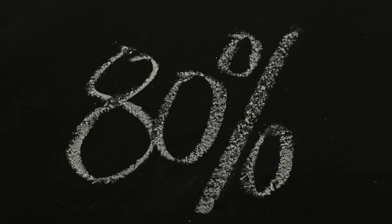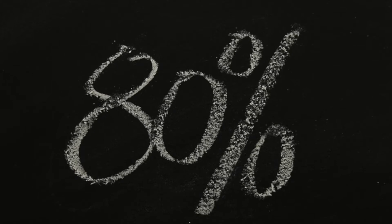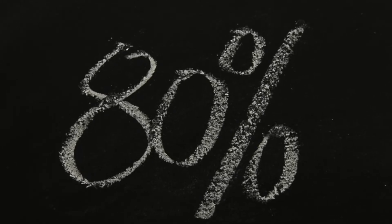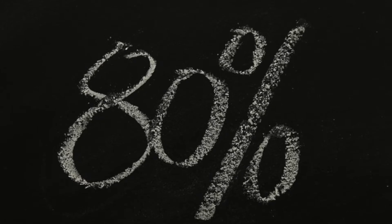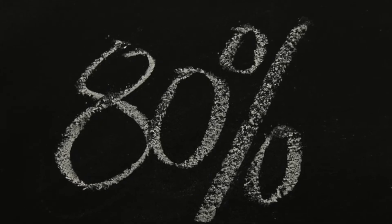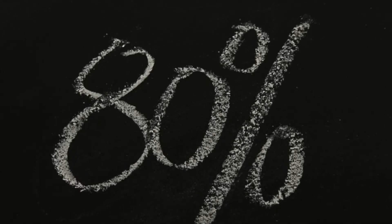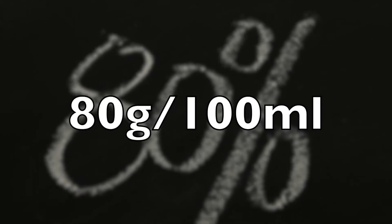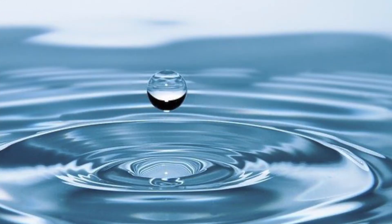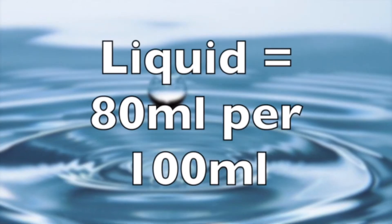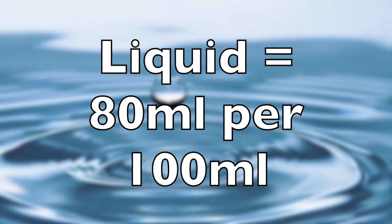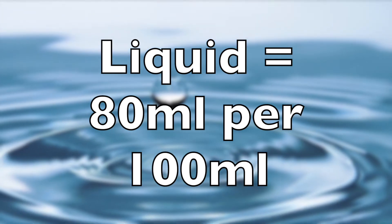For instance, if we want to make an 80% solution and our reagent is a solid like a salt or Tris in a buffer, then 80% means 80 grams in every 100 milliliters. If it's a liquid like Tween 20 detergent that we need in our reagent, then 80% should translate to 80 milliliters in every 100 milliliters.